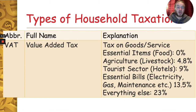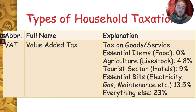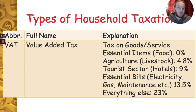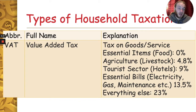PAYE, PRSI, and USC are all direct taxes — they're taken directly off your income and paid directly to the government. VAT, value-added tax, is an extra tax placed on goods and services and is charged at different rates depending on the goods in question. Essential items like food have a 0% rate; agricultural products have 4.8%; the tourism sector — hotels, bars and restaurants — has 9%; essential bills and some non-essential food items are charged at 13.5%; and everything else falls into the 23% category. Note these percentages are correct as of March 2021 and are liable to change every year in the national budget.